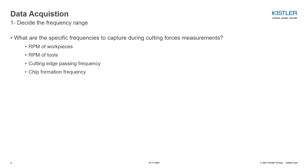Chip formation frequency describes how often a chip occurs. You can collect chips and measure the length — since you know the cutting speed, the chip formation frequency can be calculated. You can also look at contact lengths on your chip site to calculate chip formation frequency. Lammel building refers to deformation bands that occur in the shear plane. These are affected by material type, process data, and tool coatings, and help understand machinability and why certain wear types occur in tools.